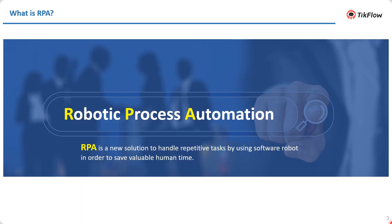RPA stands for Robotic Process Automation. RPA is a new solution to handle repetitive tasks by using software robots in order to save valuable human time. RPA technology is changing how the world gets work done today.